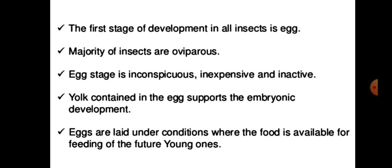The first stage of development in all insects is the egg. Majority of insects are oviparous. The egg stage is inconspicuous, inexpensive, and inactive. Yolk contained in the egg supports embryonic development. Eggs are laid under conditions where food is available for feeding of the future young ones.